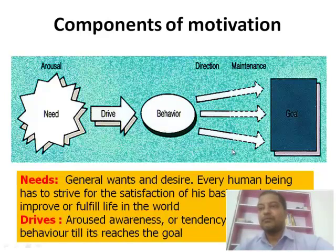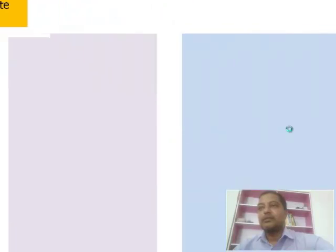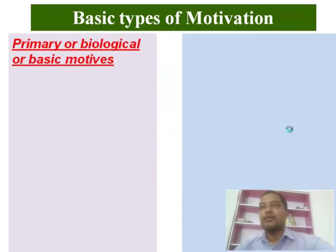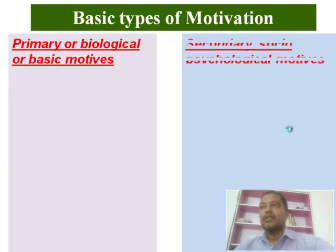The goals and motives lead us to the two main categories of motivation: first, the primary or biological or basic motives, and second, the secondary or socio-psychological motives.